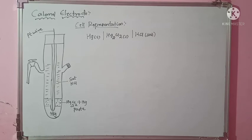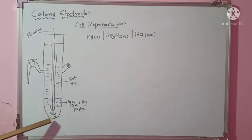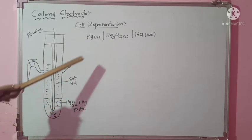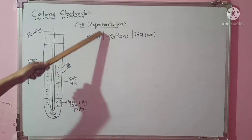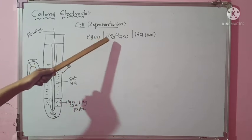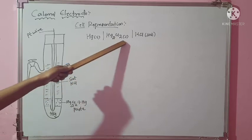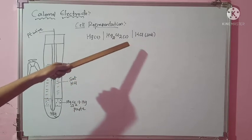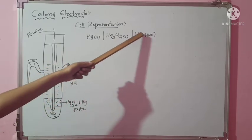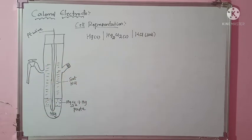Now let us see the cell representation, and then we will see the working of this calomel electrode. The cell representation is very simple: first you write Hg (solid), which is in contact — shown by the vertical line — with mercurous chloride Hg2Cl2 (solid), and that is in turn in contact with KCl saturated solution.